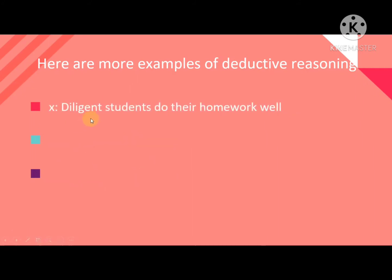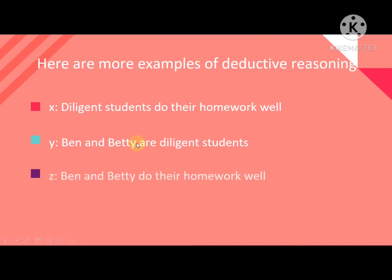Another example: Diligent students do their homework well — this is the general statement. Ben and Betty are diligent students — this is the particular statement. And for the conclusion Z: Ben and Betty do their homework well.